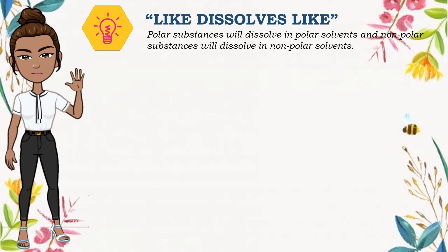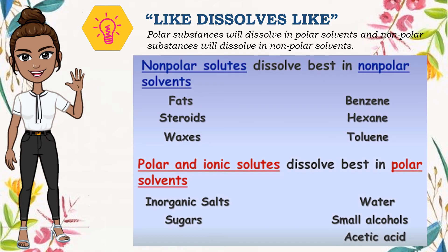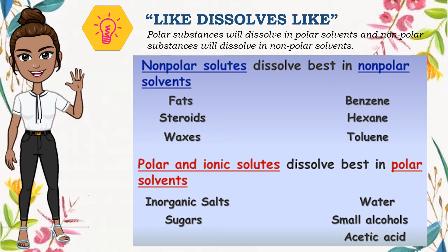It's helpful to know which compounds are intermediate between polar and non-polar because you can use them as an intermediate to dissolve a chemical. Non-polar solutes dissolve best in non-polar solvents, like fats, steroids, waxes, benzene, hexane, and toluene, while polar and ionic solutes dissolve best in polar solvents, like inorganic salts, sugars, water, small alcohols, and acetic acid.